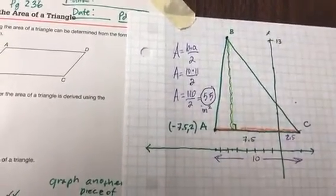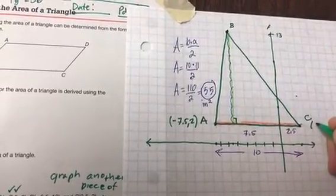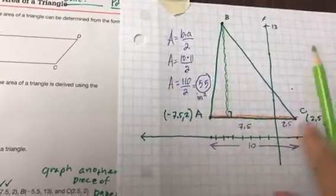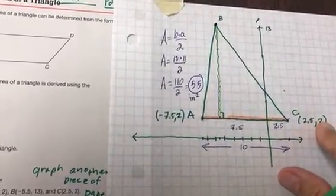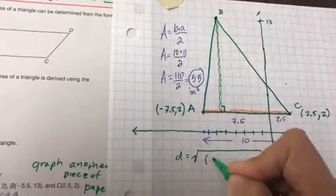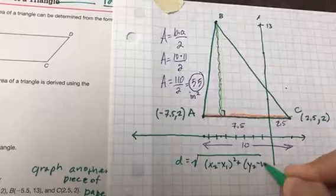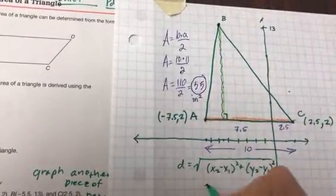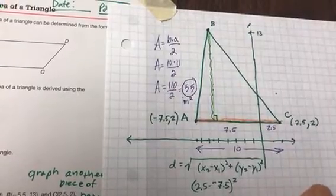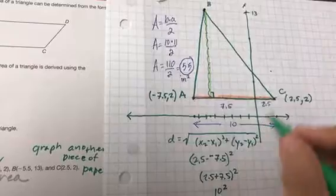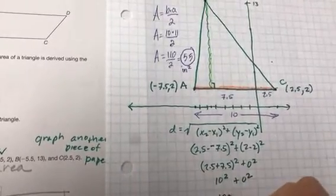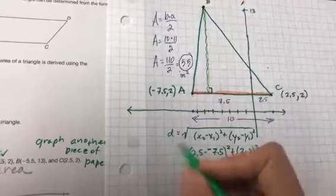Now we can use the distance formula from last chapter. Lots of people don't like it, but you totally can. Notice the distance between negative 7.5 and 2.5 on a number line is 10, and the distance between two and two is zero. So if I use the distance formula, the x values would be two and a half minus a negative seven and a half squared, right? And the y values would be two and two, so two minus two.